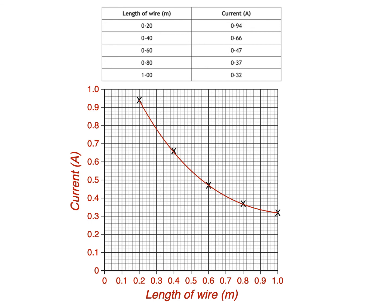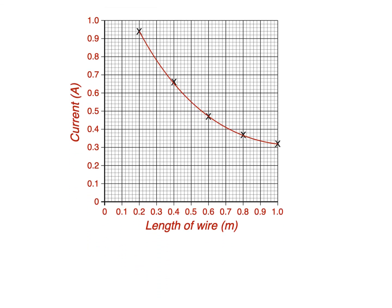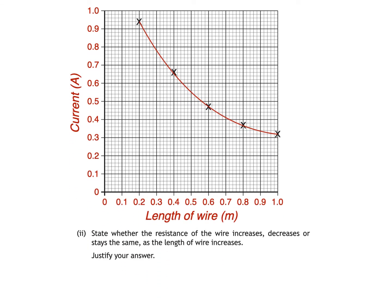Part 2 says state whether the resistance of the wire increases, decreases or stays the same as the length of wire increases. Justify your answer.